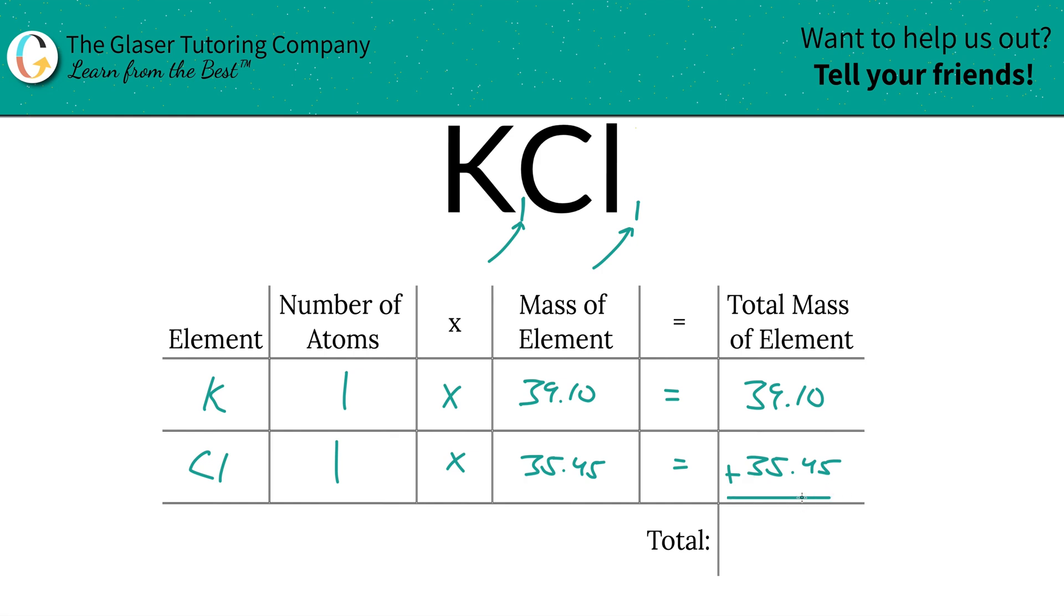Anyway, add this column together and you will arrive at the total mass of the entire compound. So 74.55. Since we're solving for molar mass, the units here are in gram per mole. That's all there is to it, ladies and gentlemen.